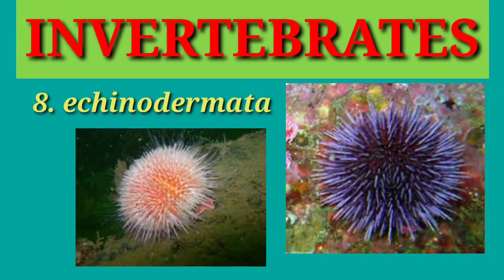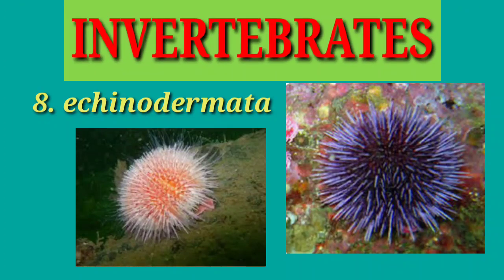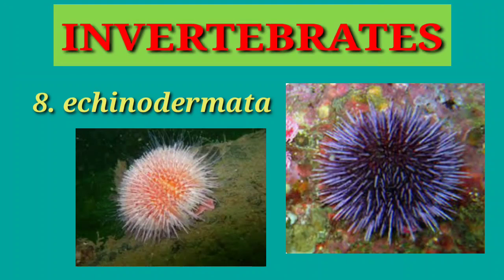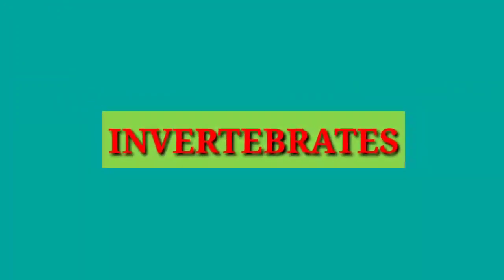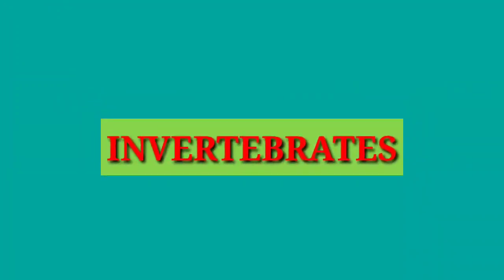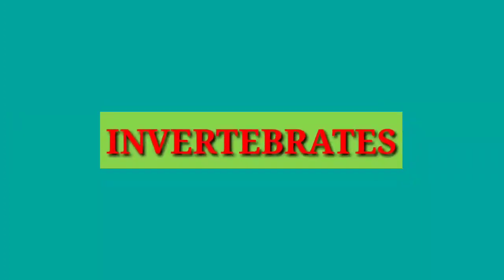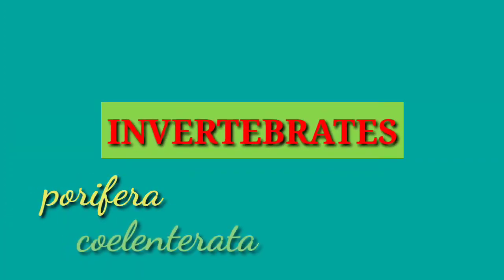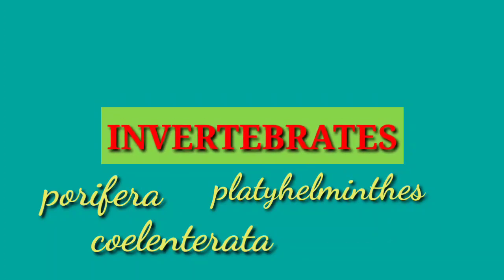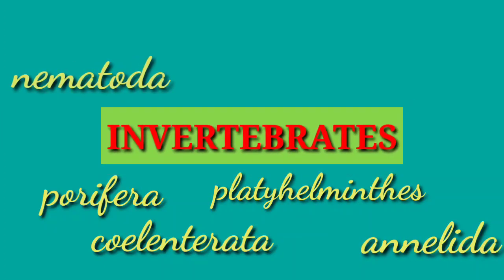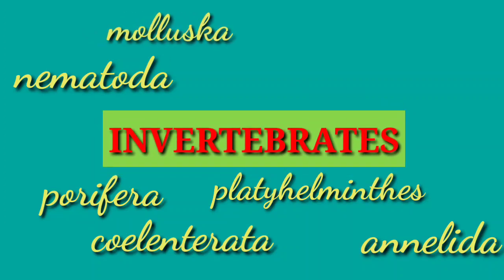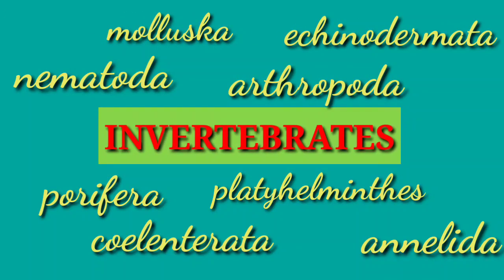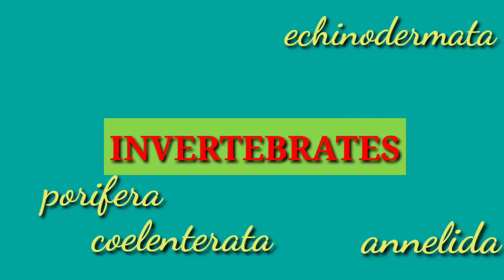Echinoderms have spines that enable them to move. Most echinoderms are sedentary, meaning they do not move from place to place. In summary, invertebrates form several subgroups: porifera, coelenterata, platyhelminthes, annelida, nematoda, mollusca, arthropoda, and echinodermata. They each have characteristics that make them different from one another.